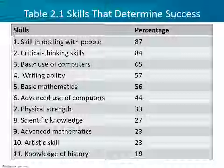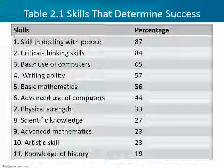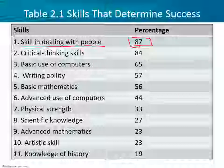Table 2.1 covers skills that determine success. From a Gallup poll of working adults, nearly any poll of skills needed for career success finds interpersonal skills identified as the most important. Look at the number one skill there: skills in dealing with people, at 87%. Even though we are more online with more remote jobs, you still need to have people skills — still pretty vital.